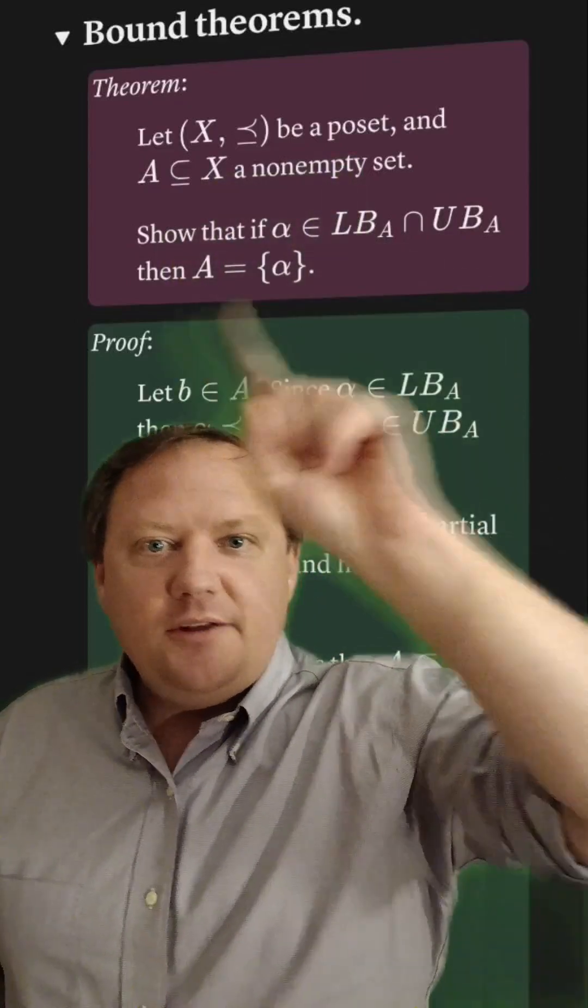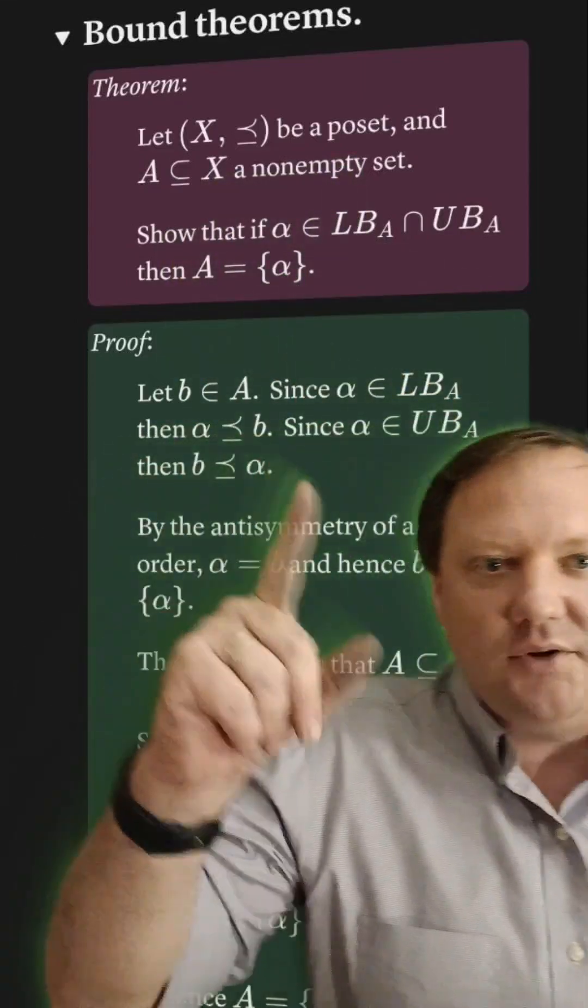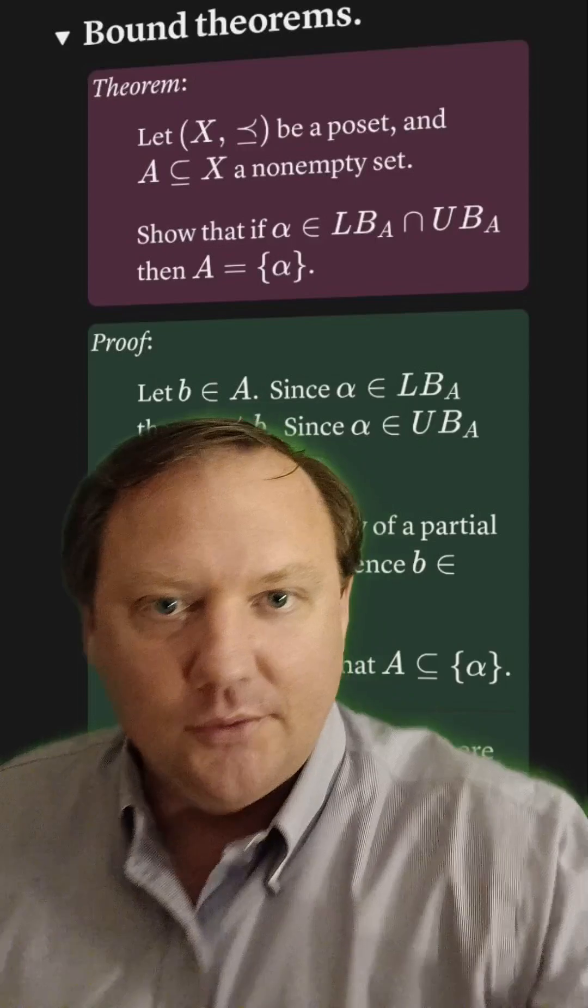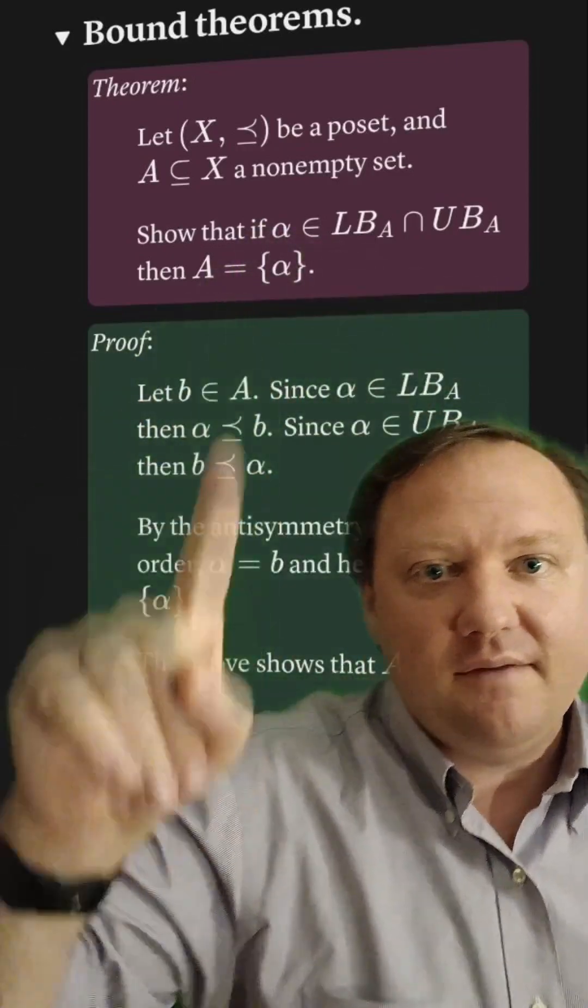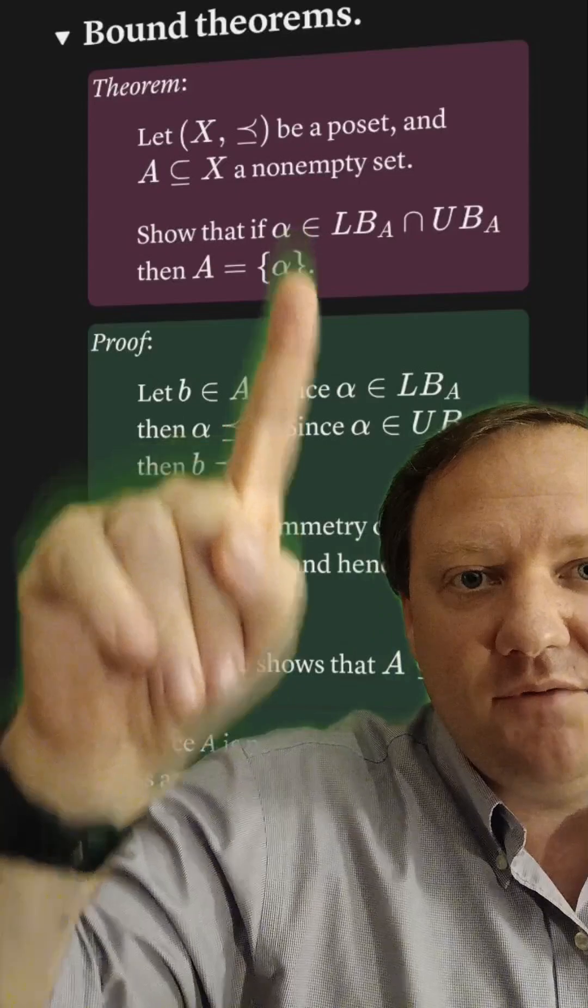It may be a bit grand to call this a theorem, but let's prove this fact as a quick exercise using the concepts of bounds. We'll prove that if alpha is both a lower bound and an upper bound of a given set, then the set must consist of just alpha.